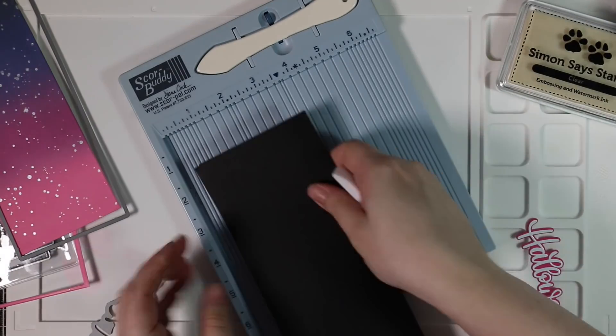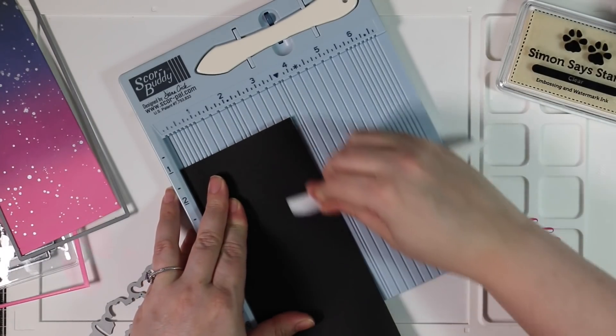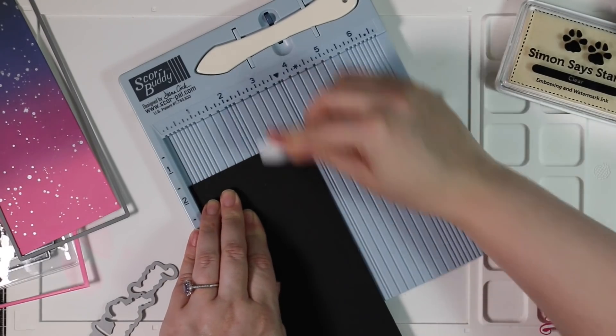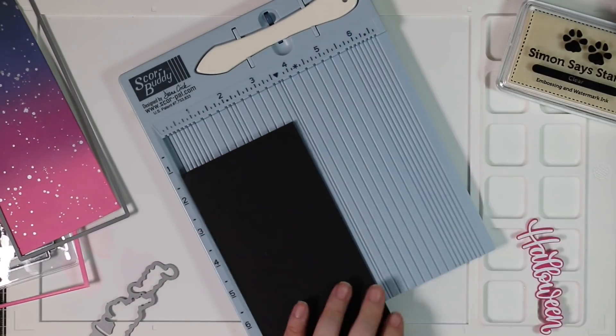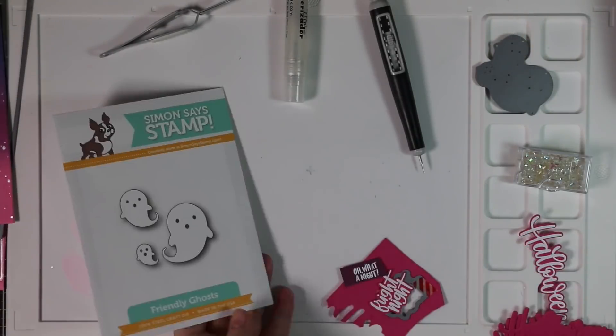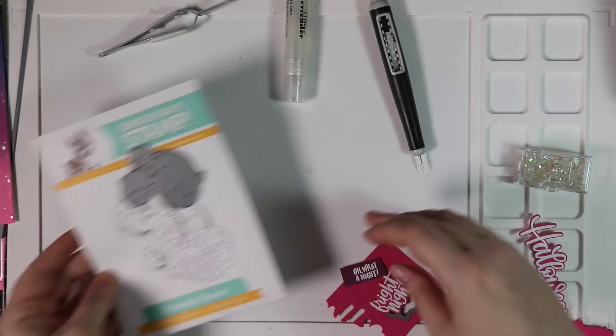But that is one tool that I think I got rid of years ago, the big score pal. Had that for years and then they came up with a score buddy, which was beyond perfect. And then yeah, the score buddy still works for this. You just have to flip the cardstock around. So anyhow, scored my card base.